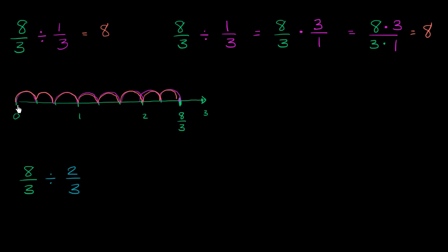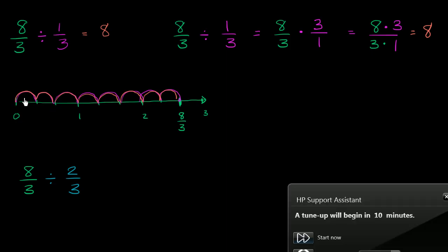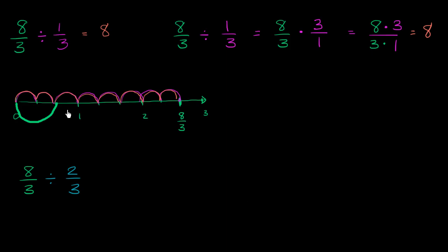Well, let's think about it. One jump. This is a different color. We could make 1 jump. That's the same color as my 8 thirds. We could do 1 jump. My computer is doing something strange. We could do 1 jump, 2 jumps, 3 jumps, and 4 jumps. So we see 8 thirds divided by 2 thirds is equal to 4.